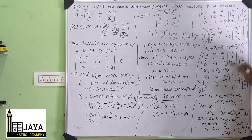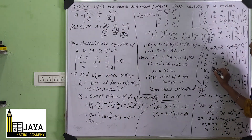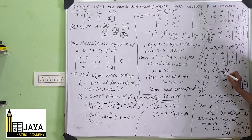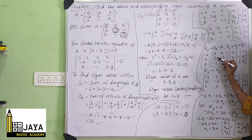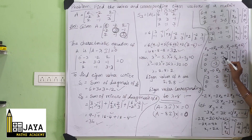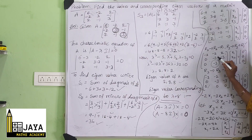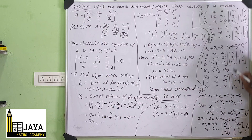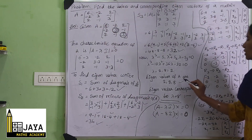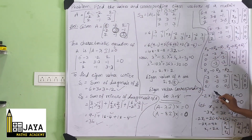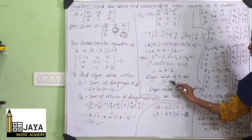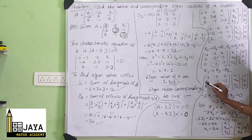After row operations, the third row becomes 0 via R3 = R3 - R2, giving 0 in the last row: [[-2, -2, 2], [0, -3, -3], [0, 0, 0]]. Since one eigenvalue corresponds to one non-zero row, we have two zero rows, confirming the rank is 1 for this eigenvalue — wait, rank is 2 here with two equations.